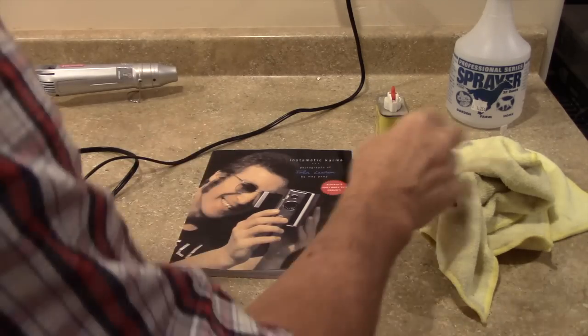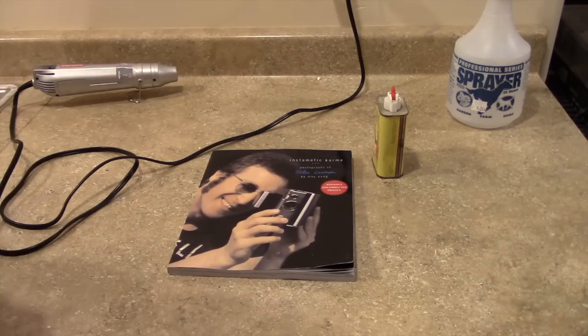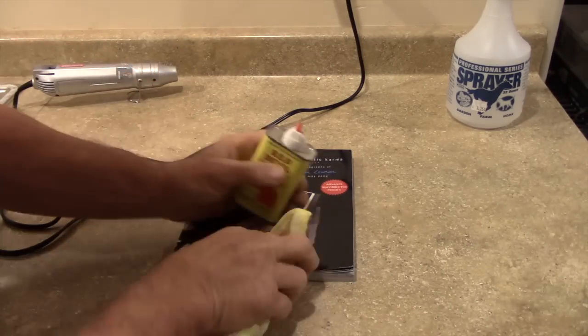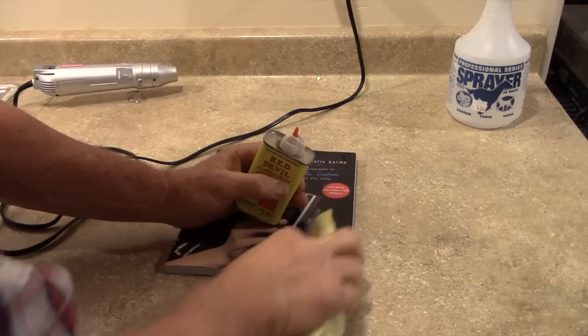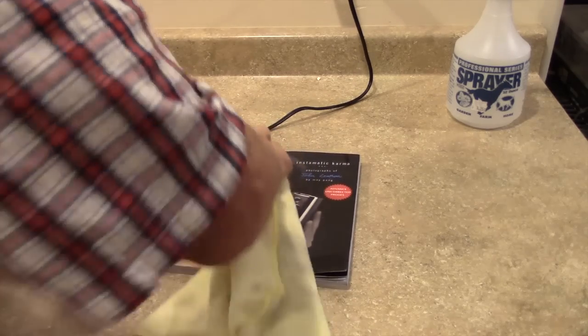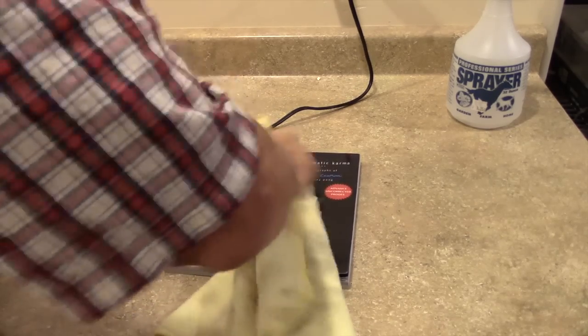Next, where the labels are, there'll be a little bit of sticky glue and I'll put a little lighter fluid on here and I'll just clean that glue off of there about like that. Another little bit up there. Get that cleaned off like that.